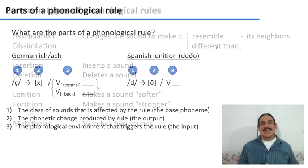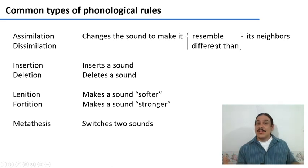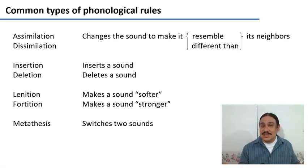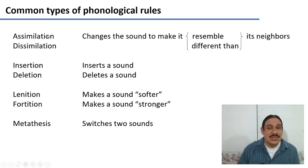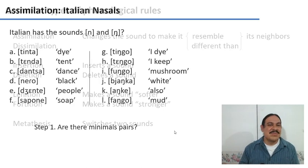Having reviewed that, let's take a look at some common types of rules. The one that we'll focus on right now is assimilation, which is changing a sound to make it resemble its neighboring sounds. We'll study the other types of rules in the next video. So for now, assimilation.